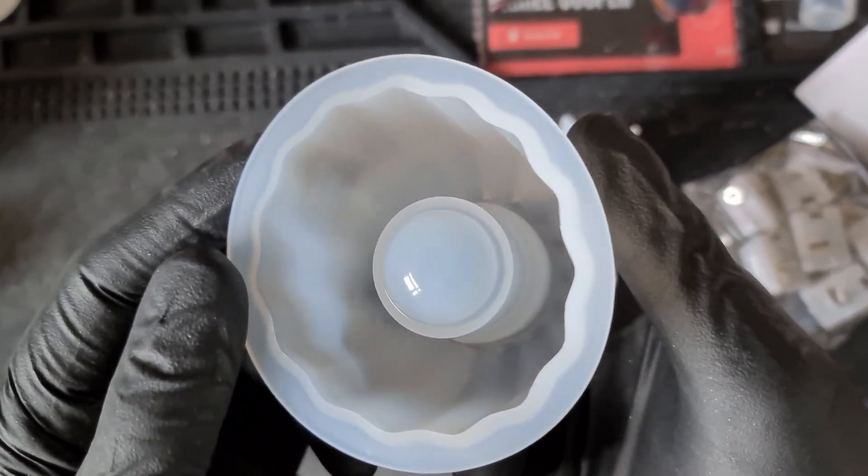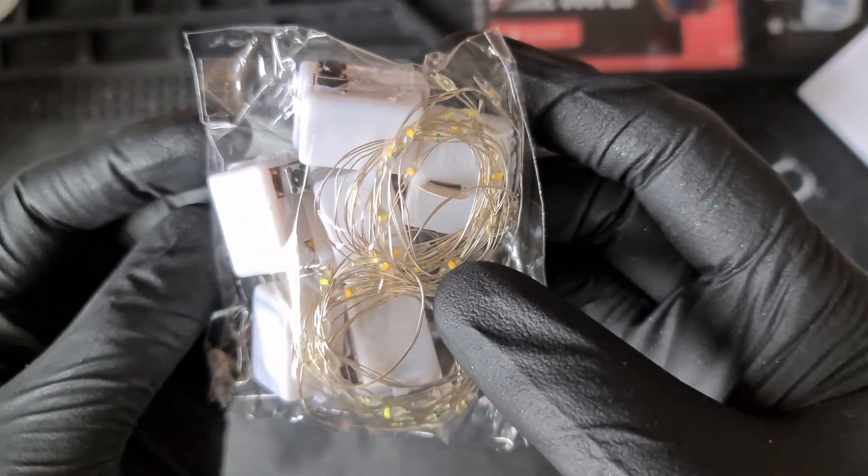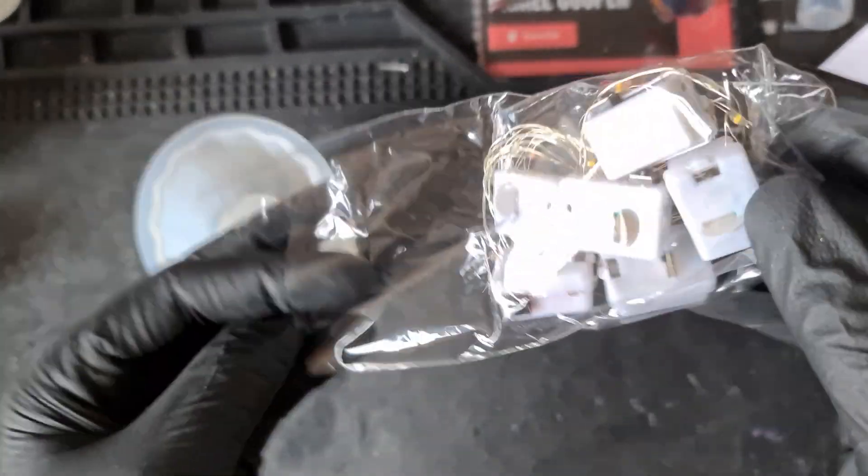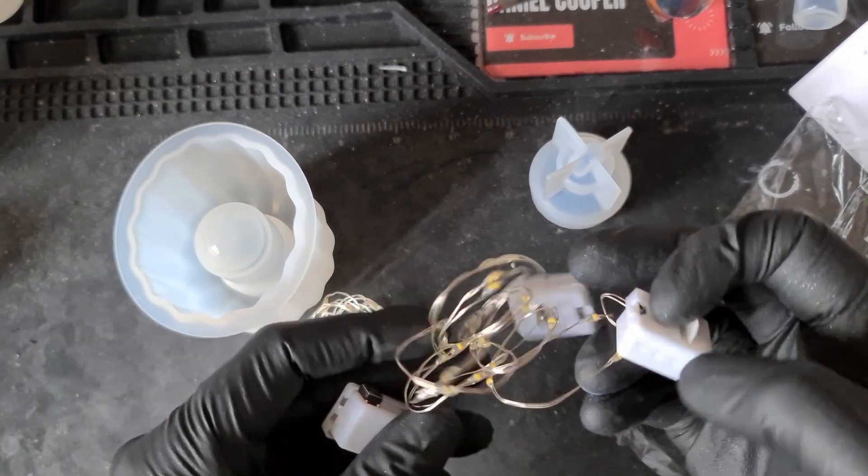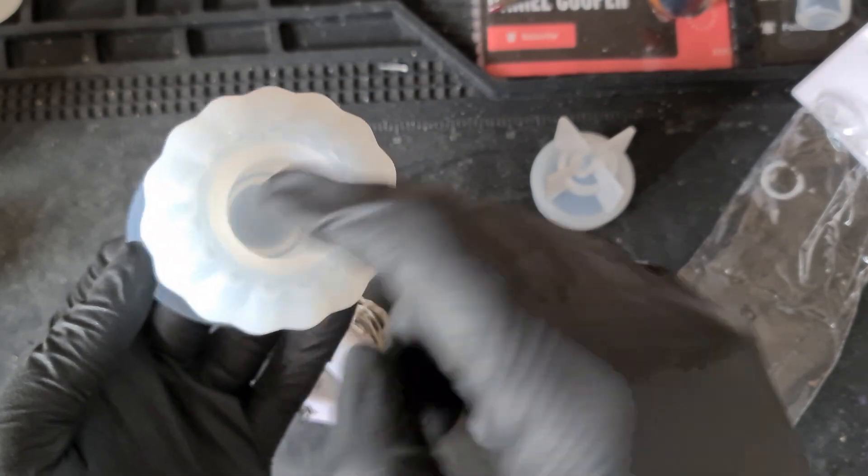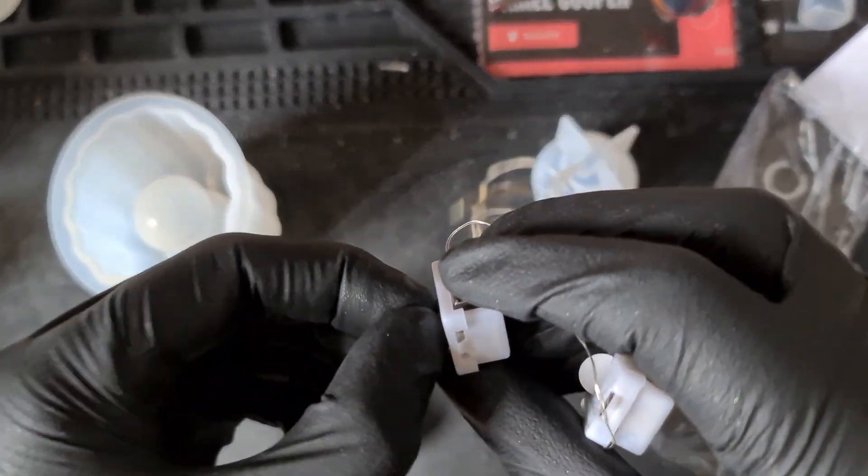It comes with some light sets as well. I think some are colored and some are yellow. You get a few in there but you can always pick these sets up really cheap. It's just making sure that they fit inside the actual pieces.